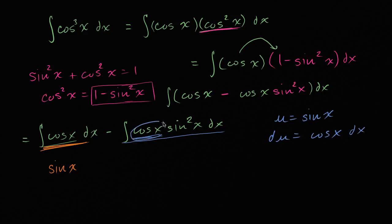And so this part and that part is going to be du, and then this is going to be u squared. So this is going to be minus, we have the integral of u squared du. Well, what is this going to be? This is going to be, we're going to have negative u to the third power over three.